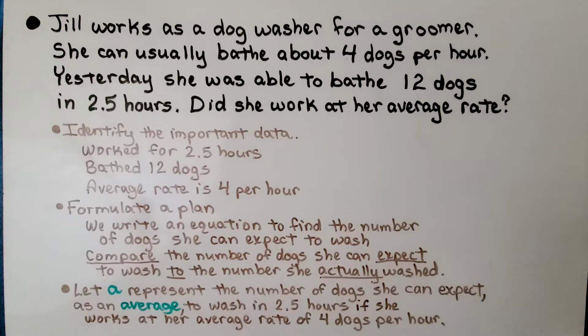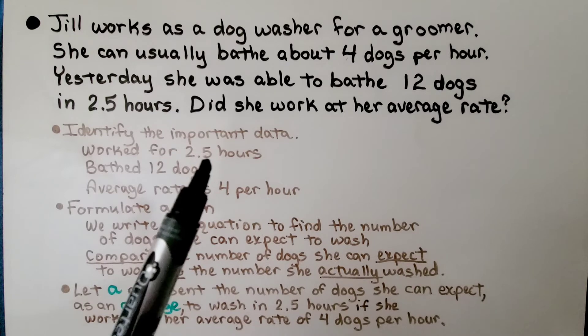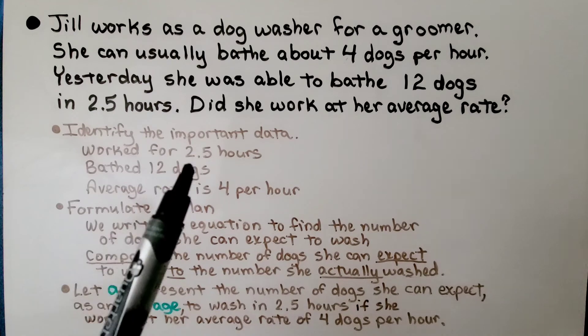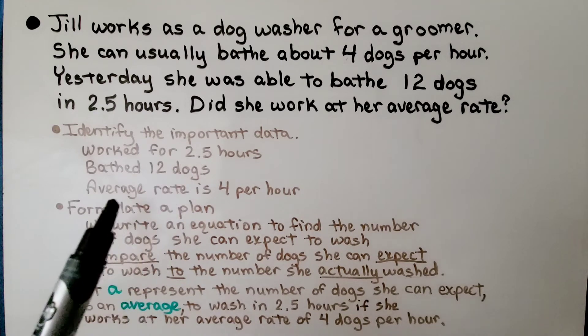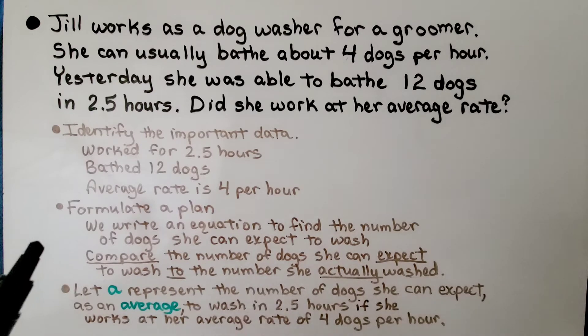We identify the important data: she worked for 2.5 hours, she bathed 12 dogs in that time, and her average rate is 4 per hour. We formulate a plan.